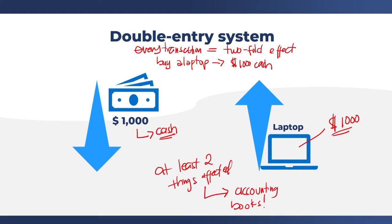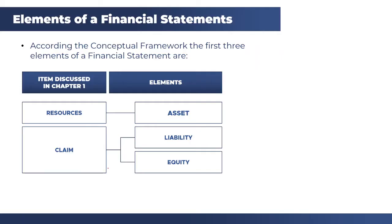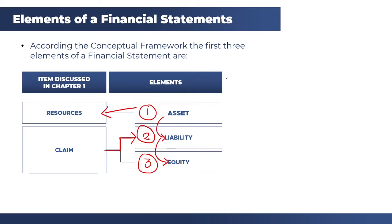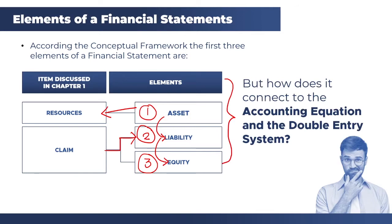We're going to discuss this further using the conceptual framework of accounting. According to the conceptual framework, the first three elements of a financial statement are: number one, assets; liabilities; and equity. For a more detailed discussion, please visit the links in the description below where we discussed these three in detail in previous videos. As an overview: assets are the resources that a company owns; liabilities are the claims of entities on those resources other than the owners; and equity is the residual resources after you pay your liabilities.